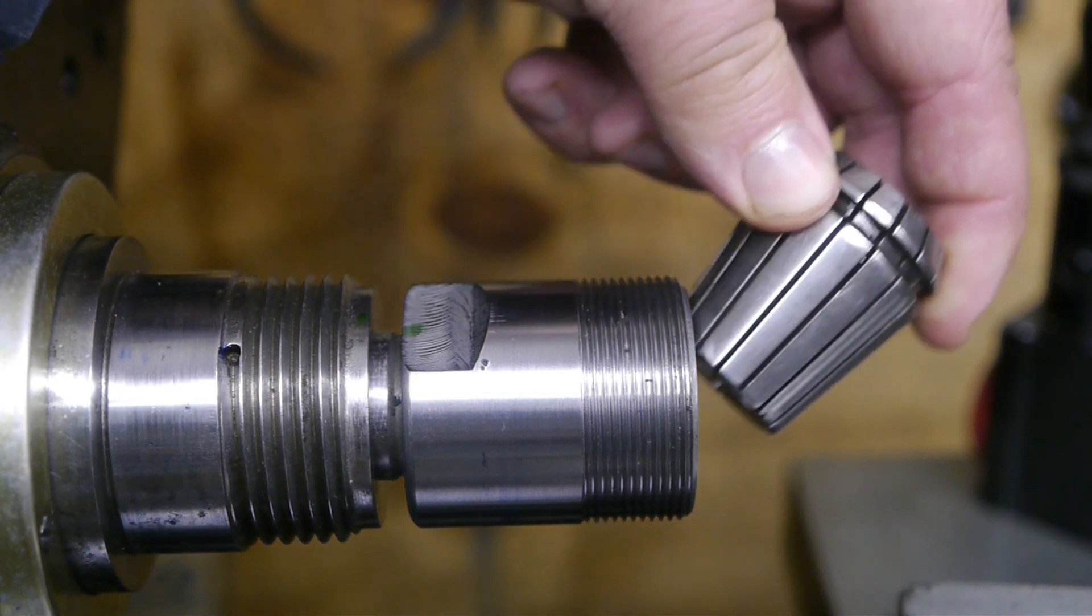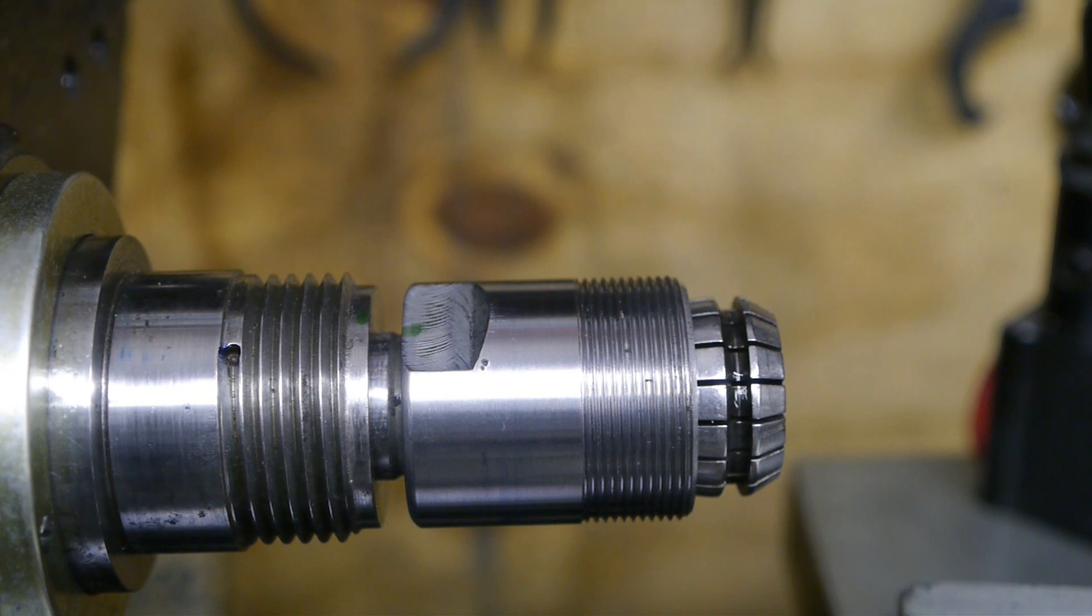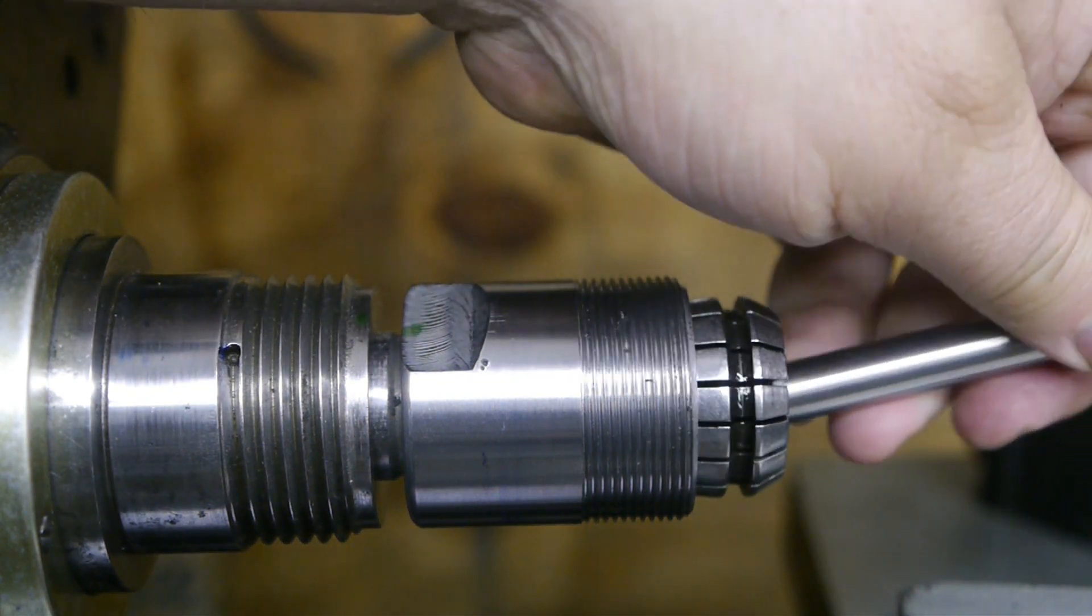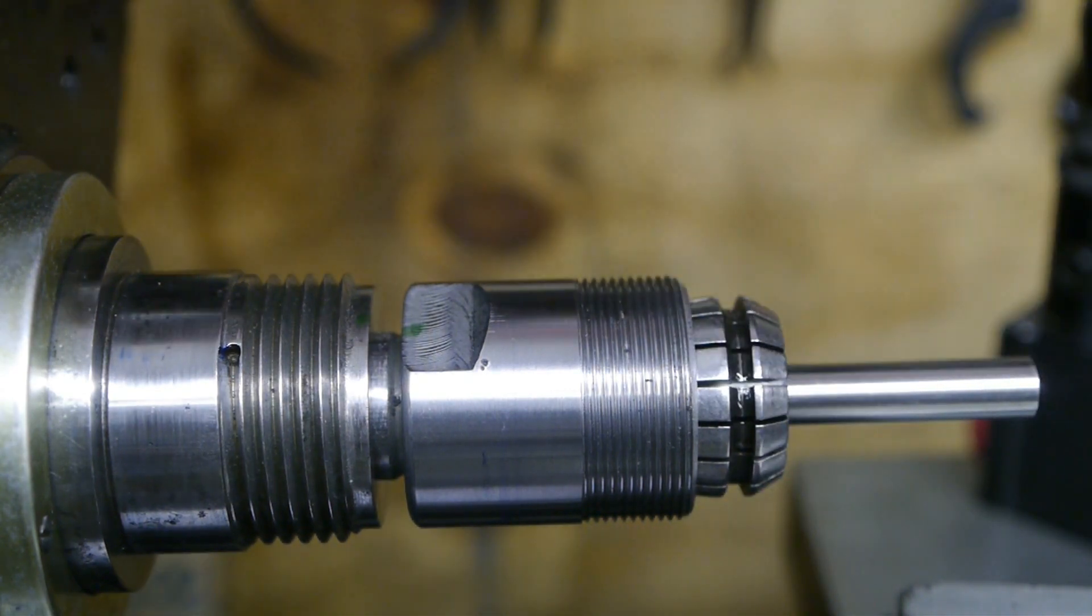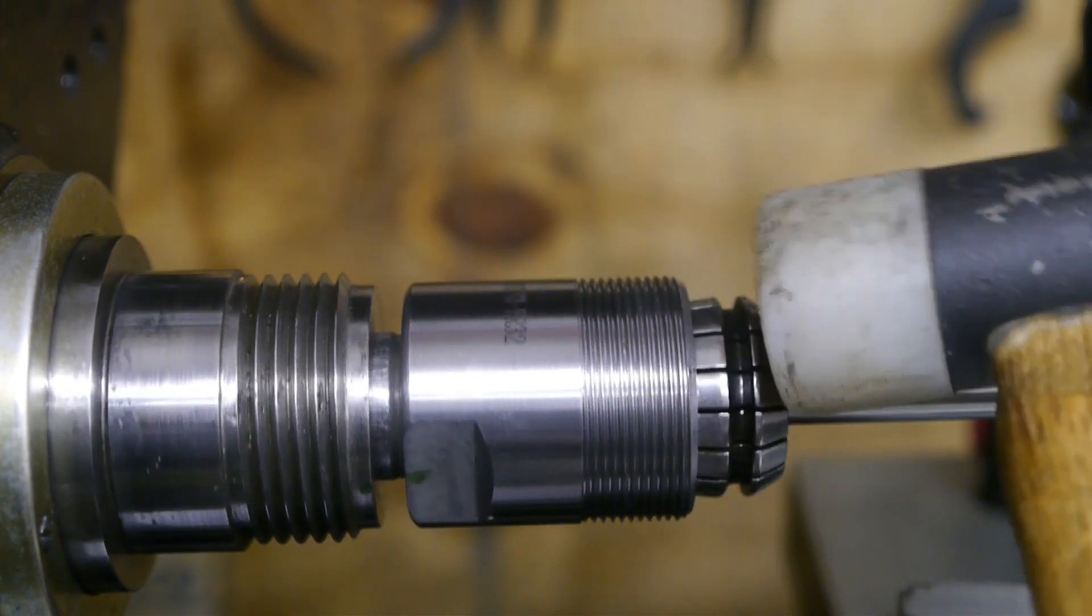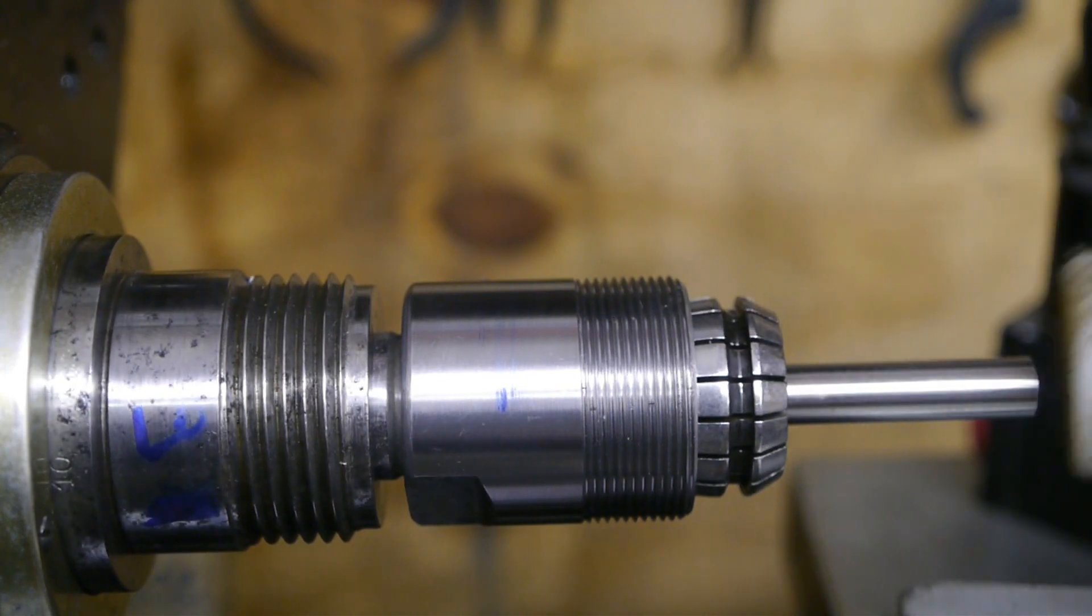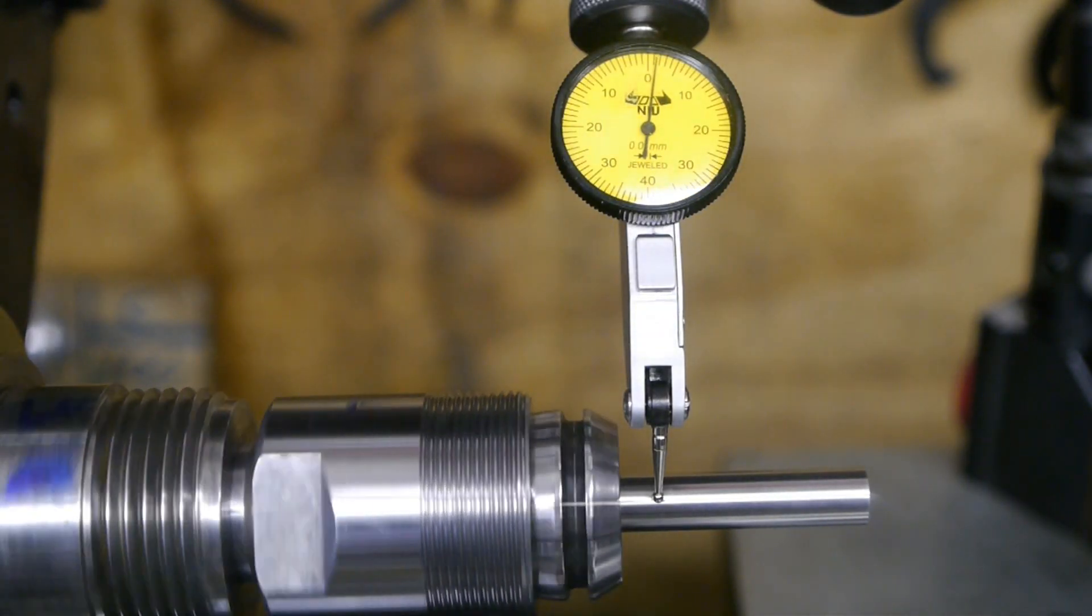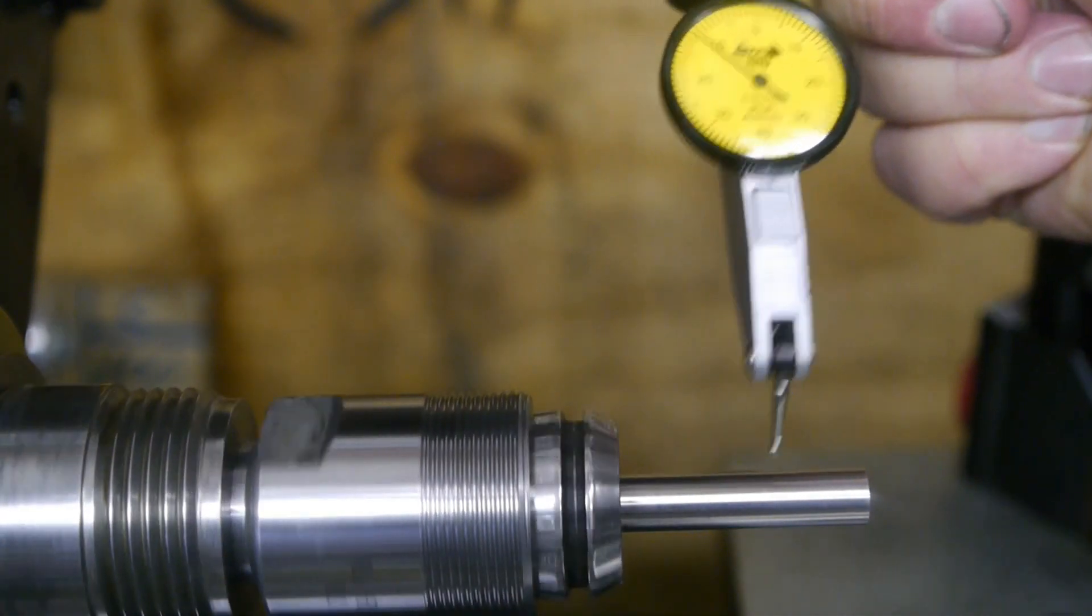This is the ten millimeter collet. It's the best one of the three I tested so far. Let's check the run out without using a collet nut. So that looks pretty good, right? Let's see what happens if I move it to the outside.